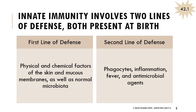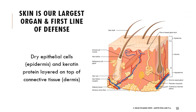The immune system works as a super system with lots of different systems interacting. For innate immunity there are two lines of defense: the first line stops stuff from getting in, and the second line involves non-specific reactions after something has gotten into our body. The first line includes the physical and chemical factors of skin and mucous membranes, as well as healthy bacteria colonizing our body. The second line includes phagocytes, inflammation, fever, and different antimicrobial agents.